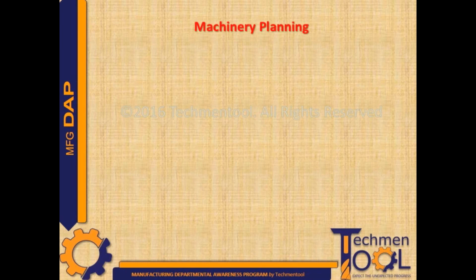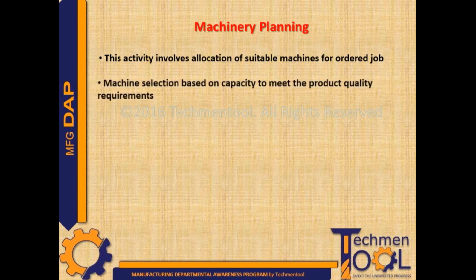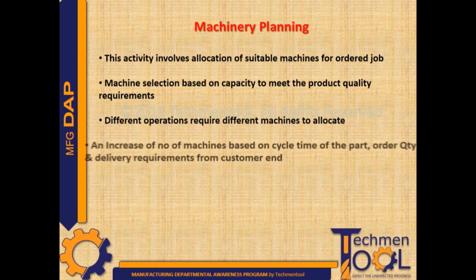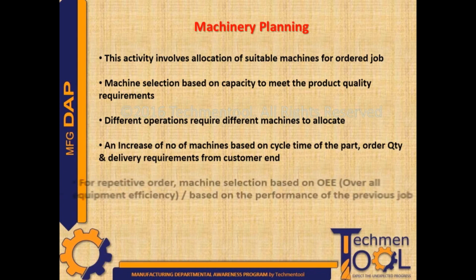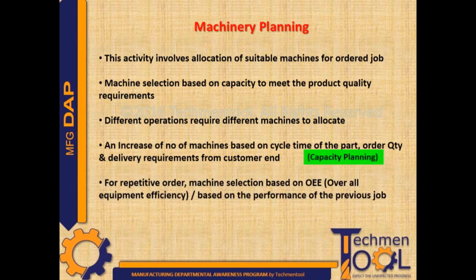Machinery planning involves allocation of suitable machines for the ordered job. Machine selection is based on capacity to meet product quality requirements, as different operations require different machines. The number of machines is allocated based on cycle time of the part, ordered quantity, and delivery requirements from the customer.